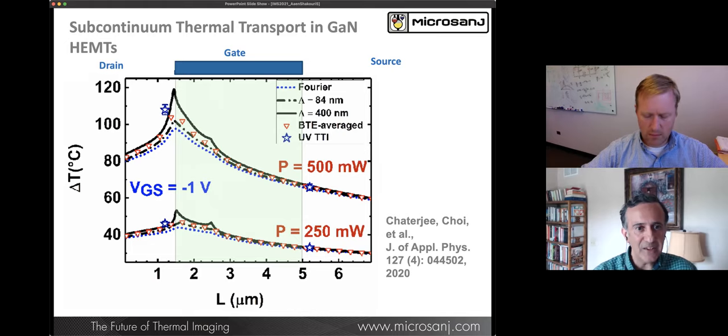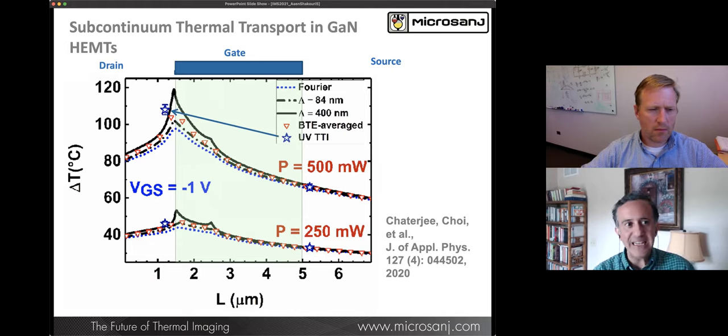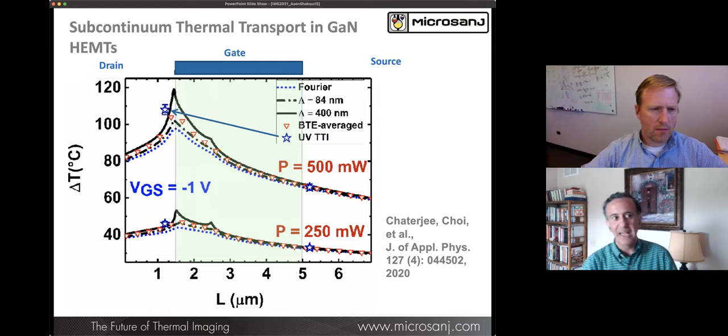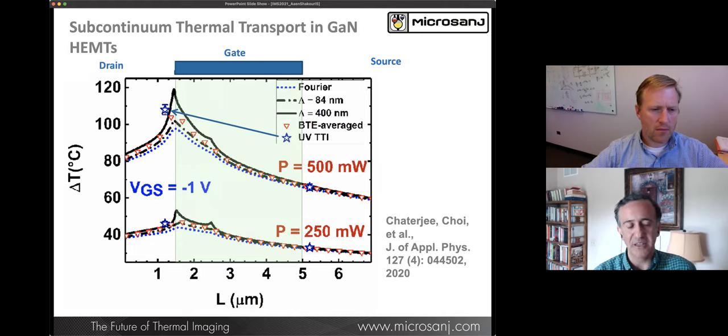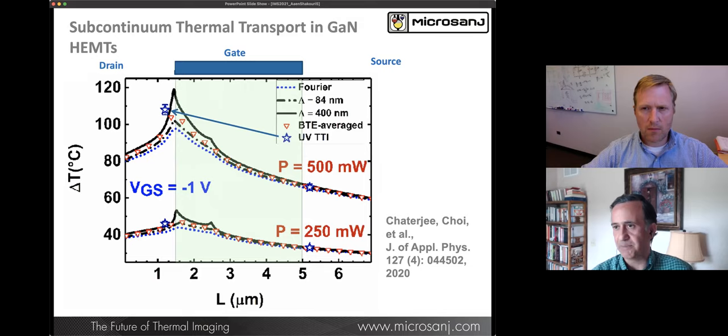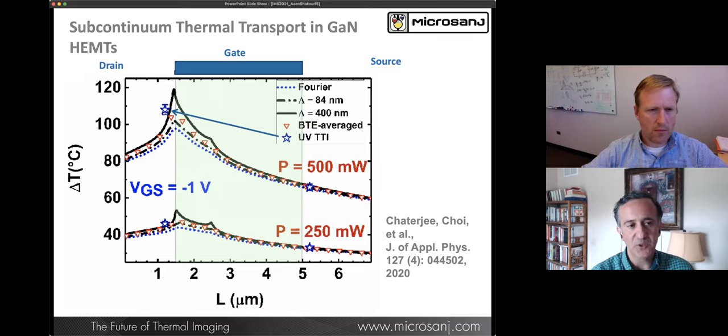The Boltzmann average with some subcontinuum and a mean free path, which is given here by numbers 84 nanometer or 400 nanometer, predicts heating that goes up to about 120 degrees. You can see the difference between Fourier and non-Fourier is substantial. 20 degrees, it's a factor of four in lifetime easily. You see a data point here that was obtained by UV transient thermoreflectance imaging. The advantage of UV when you go to 365 nanometers, you have a signal on gallium nitride near the top surface. You can see that matches quite well the subcontinuum and is much hotter than the continuum. What creates degradation is often not the highest temperature, but temperature gradients.